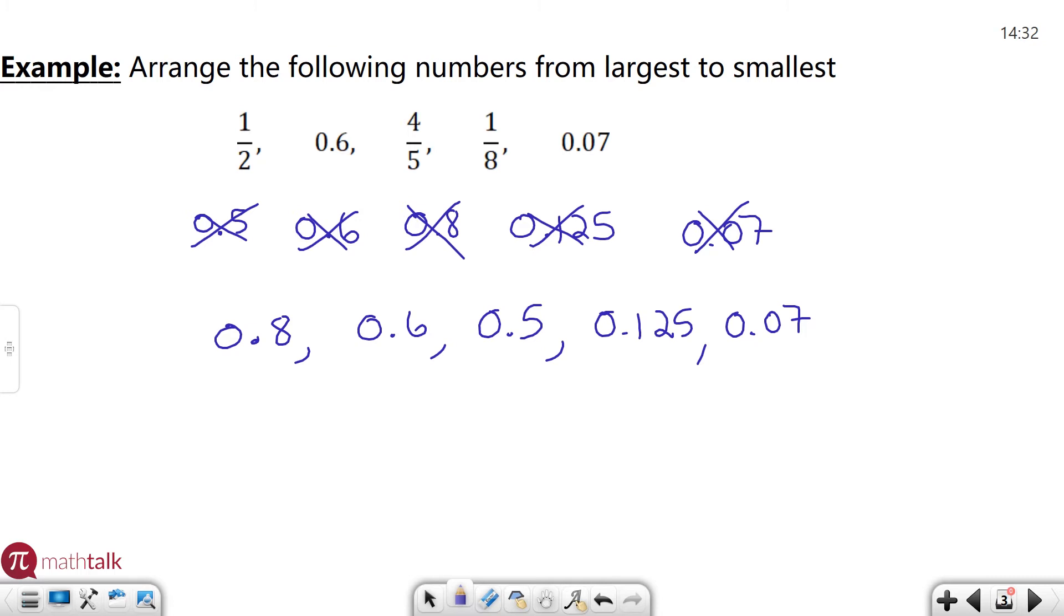So 0.8 was the four-fifths, 0.6 is 0.6, 0.5 is the fraction one-half, and then 0.125 is one-eighth, and then 0.07 is 0.07. So this right here is my final value of these numbers arranged from largest to smallest.